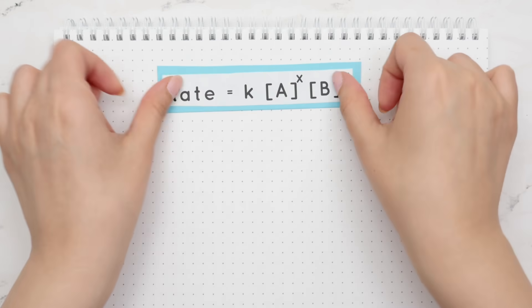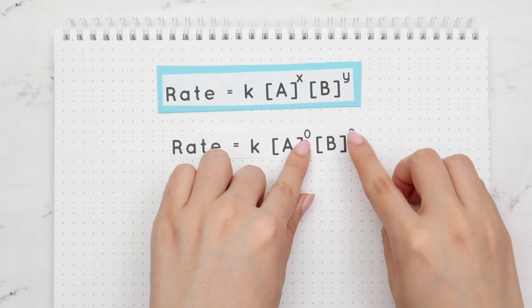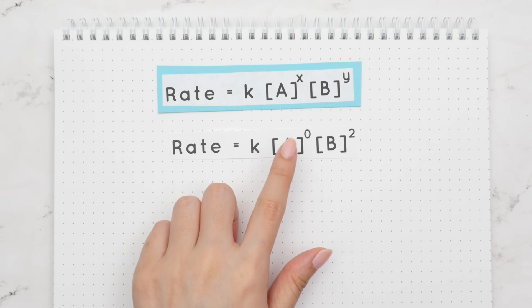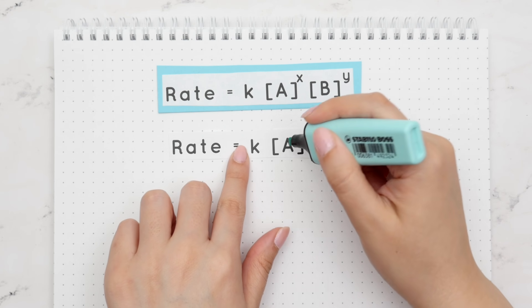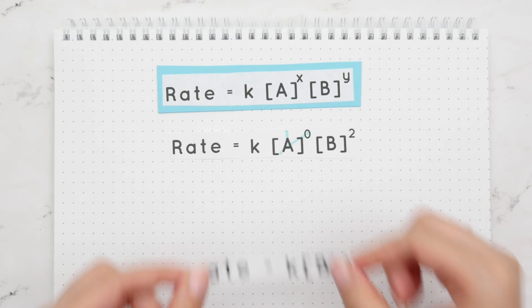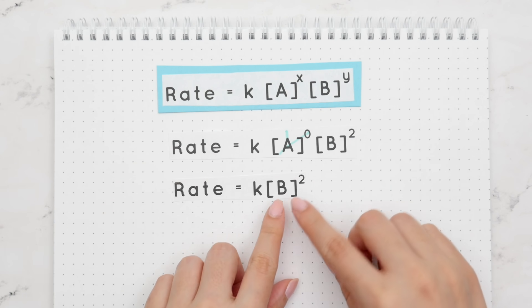Replace the x with 0 and the y with 2 and we will get this, but remember anything to the zero power is 1, so our actual rate law only includes reactant B. But wait, don't forget about your rate constant.